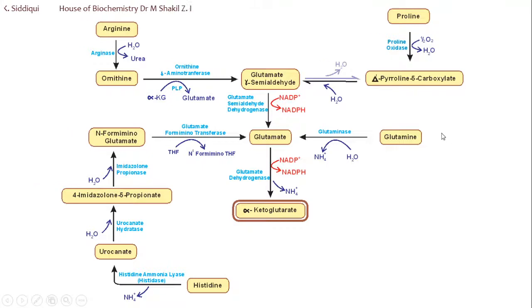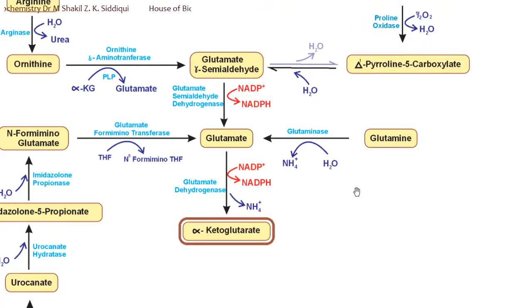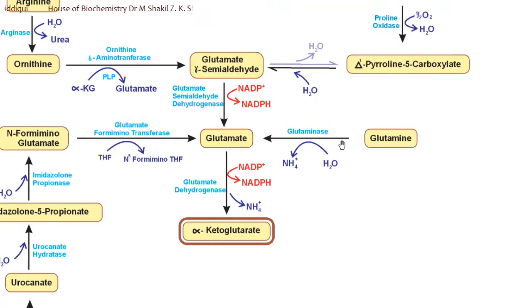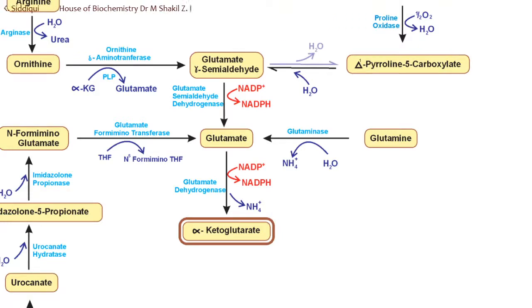Glutamine is hydrolyzed to form glutamate. The amide nitrogen group of glutamine is hydrolyzed to form the carboxylic group of glutamate. The reaction is catalyzed by glutaminase, as we remember from previous lectures. One ammonium ion is released, which goes to the urea cycle. This completes three amino acids that form glutamate: arginine, proline, and glutamine.